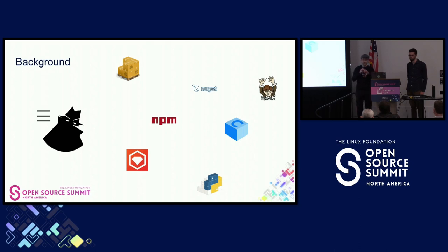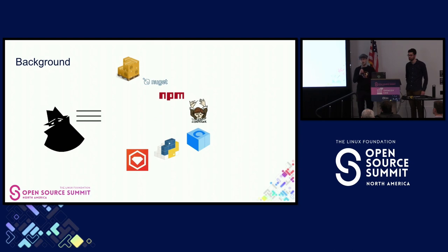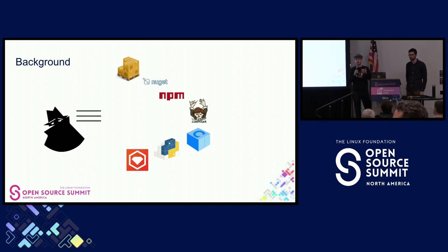We've seen almost every motivation here for bad actors. The attackers are quite clever — they prove out techniques in one ecosystem, and when that ecosystem implements countermeasures, they pivot to the next one and run the same playbook again. So the thesis of the working group is: can we take a page from the attackers and bring the package repositories together to do what they did — sharing techniques and applying lessons learned from defending one ecosystem to another.